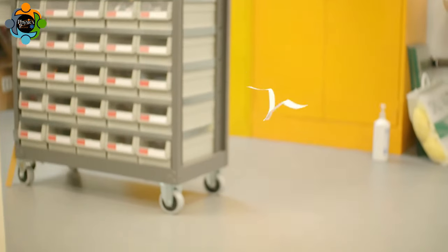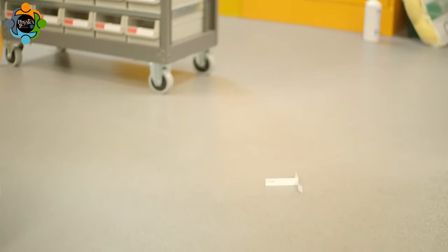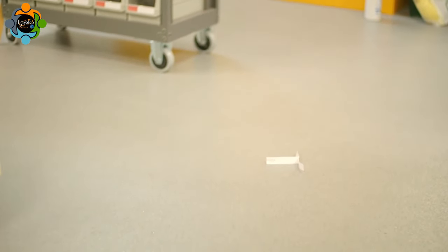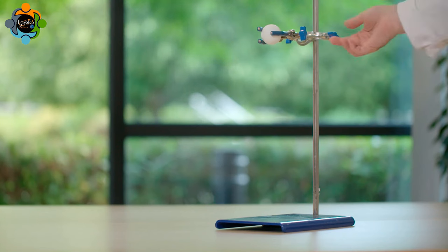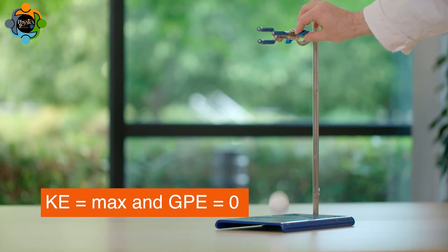The GPE stored by an object is at a maximum at its maximum height, and its kinetic energy is zero because it is not moving. When the object falls to its rest, its gravitational potential energy is at its minimum and has been transferred to its kinetic energy, which is then at its maximum.